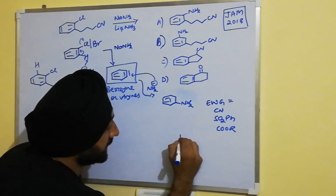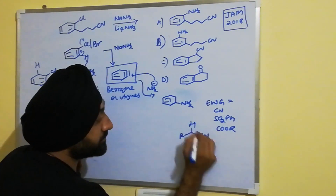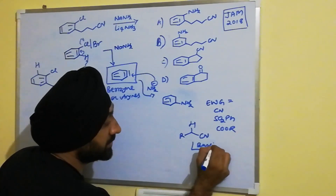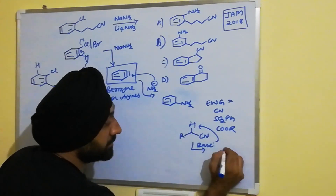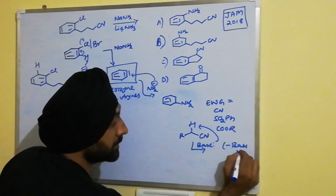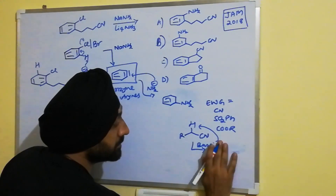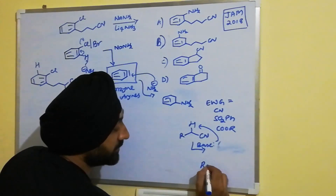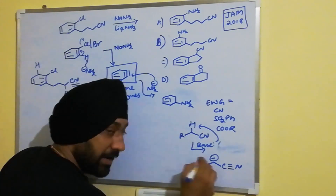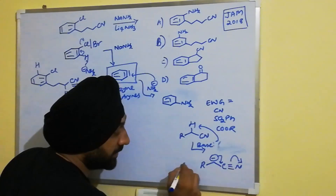To illustrate: when a base abstracts the alpha hydrogen, you get a carbanion at the alpha position, which is stabilized by resonance.